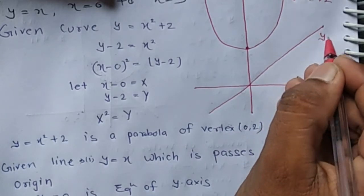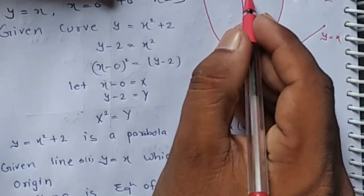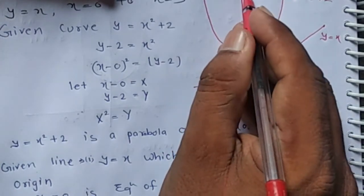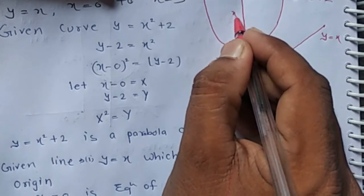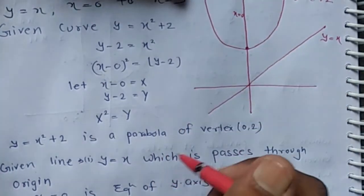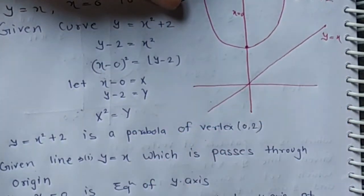x equals 0 is the y-axis, and x equals 3 is a line which is at a distance of three units from the y-axis.